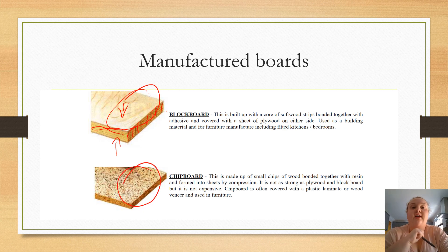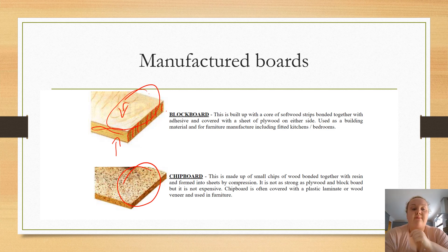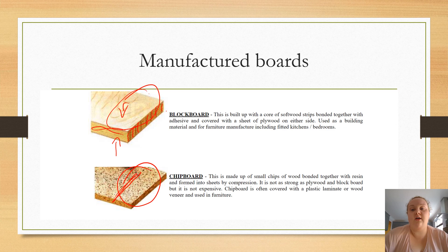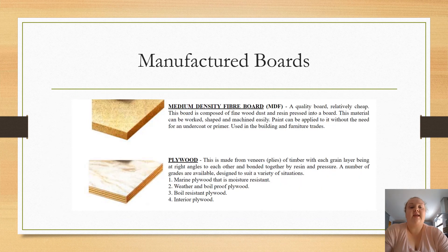Next we have chipboard. As the name suggests, it contains lots of different chips of wood all glued together with a resin and pressed into a sheet. It's not as strong as plywood or blockboard, but it is a lot less expensive. Chipboard is often covered with a plastic veneer on the front to make it look nicer, and it can be used for furniture and kitchen cupboards — the inside of cupboards is often chipboard covered with a plastic finish.